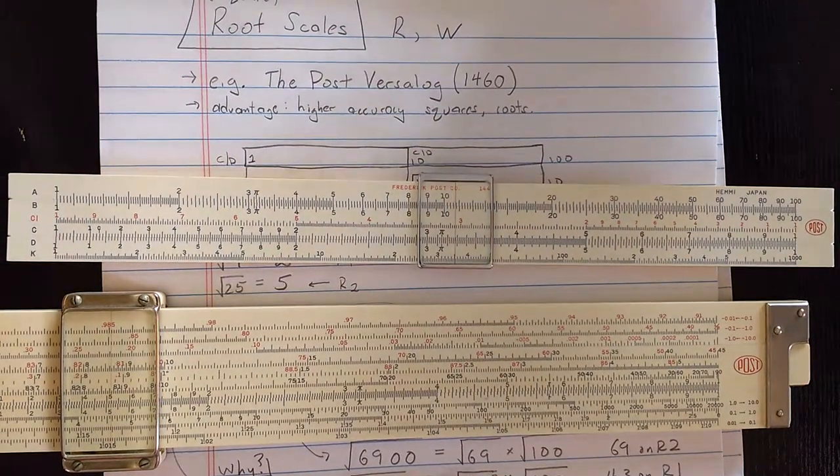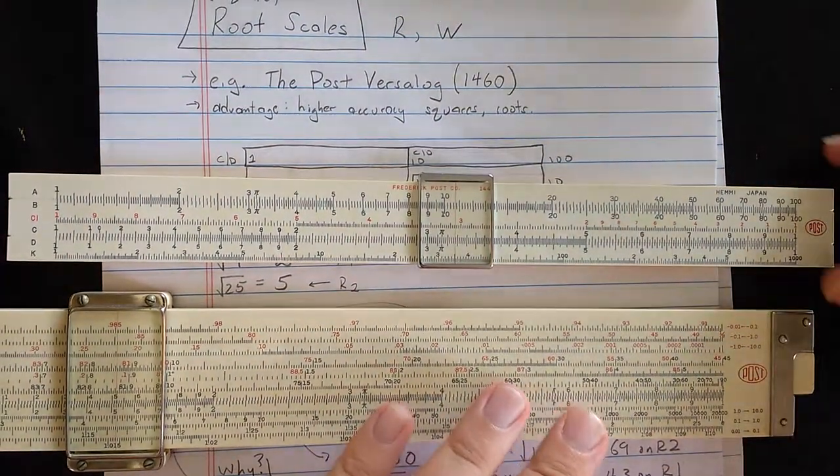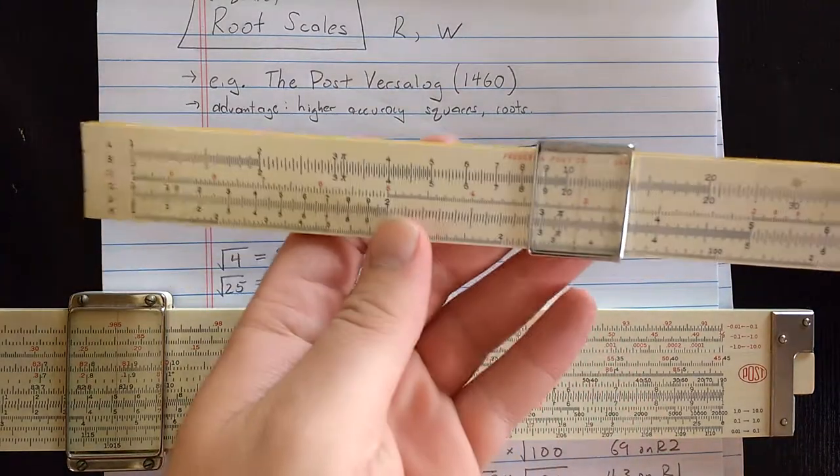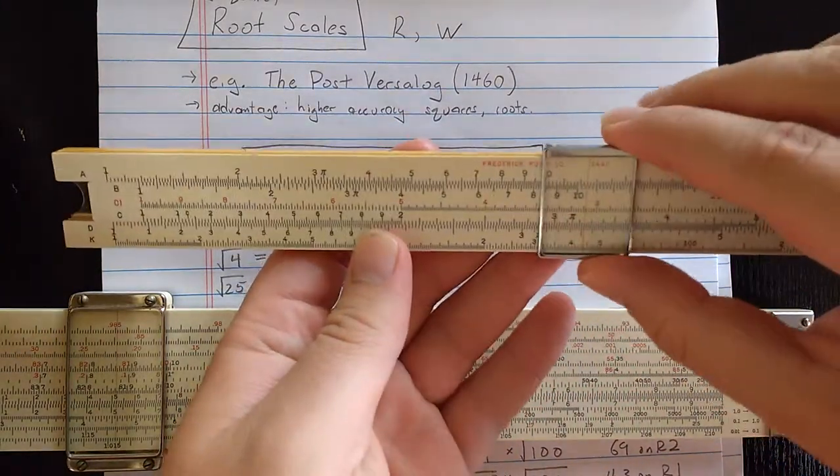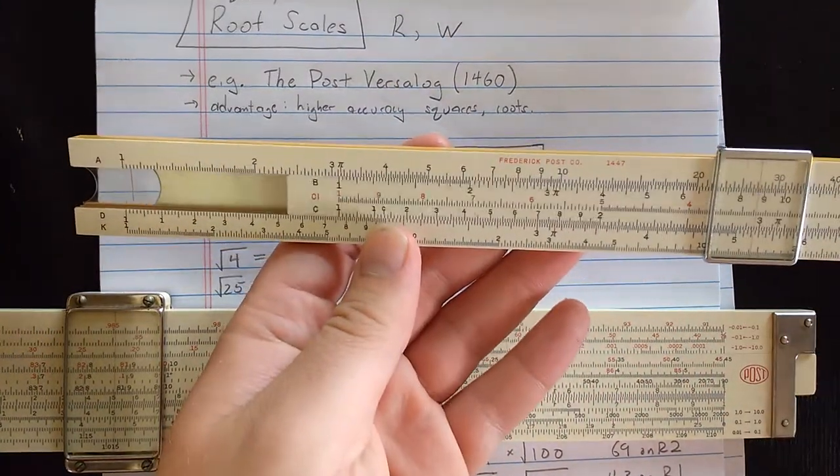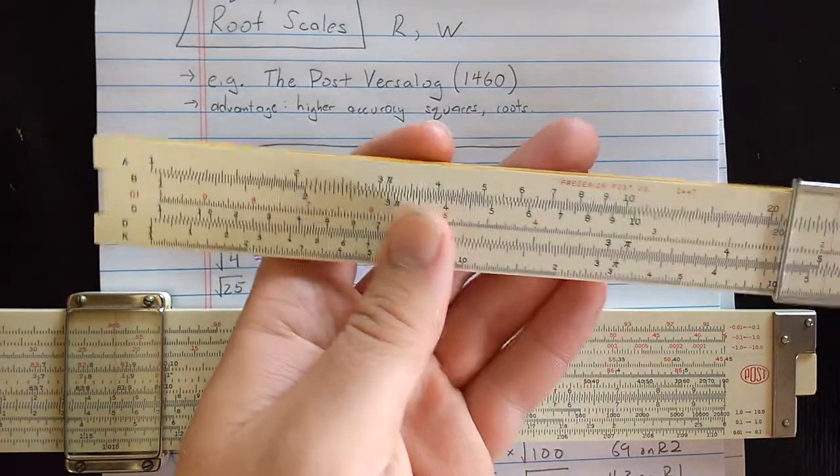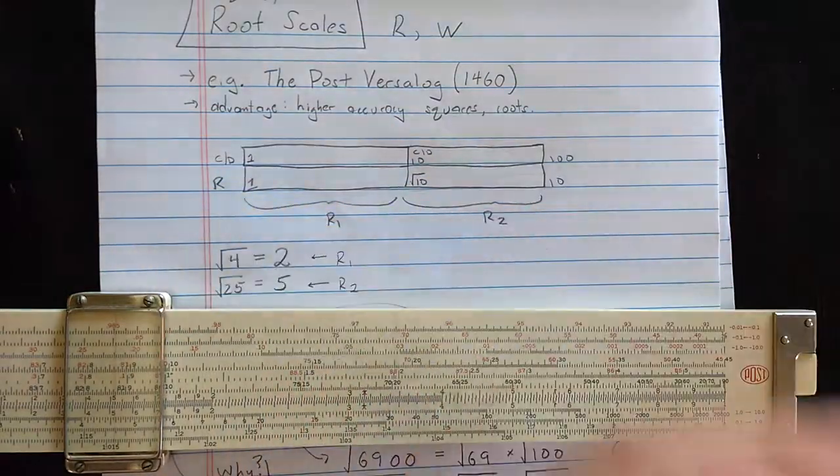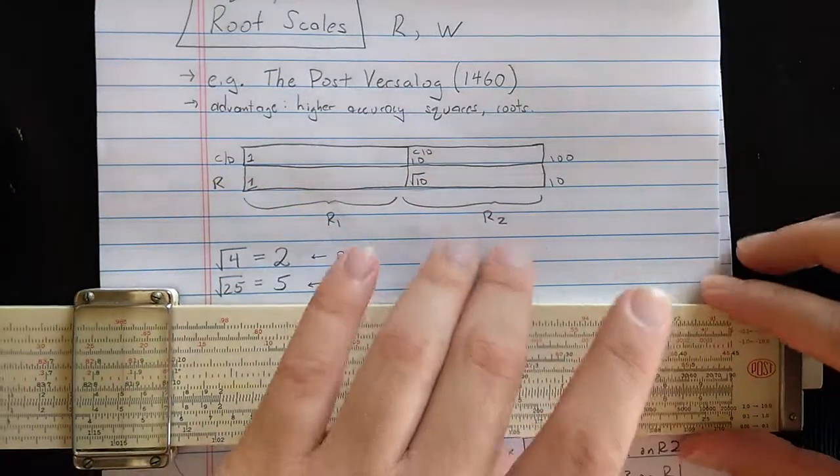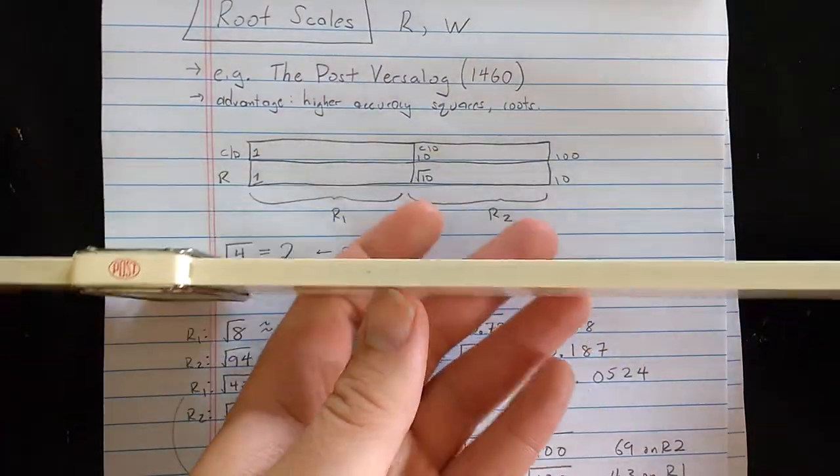Welcome back, slide roll fans. Here are two Frederick Post slide rolls, the basic 1447 model slide roll, which I've used in some videos. Mannheim type, trig on the back, very basic. Now, at the other end of their line was this slide roll.